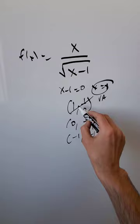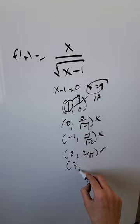Therefore, I'm thinking about values larger than 1. I can try 2. I'll have 2 divided by root 1, which is good. How about 3? 3 divided by root 2. Again, good.